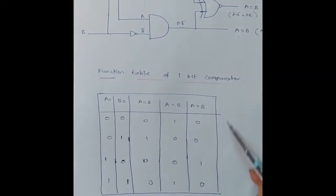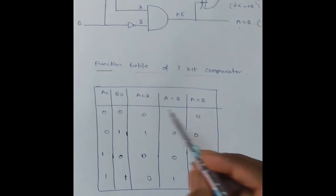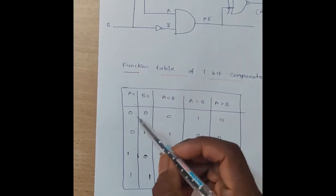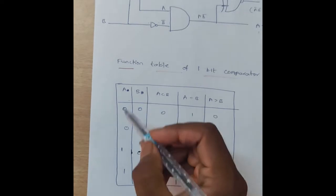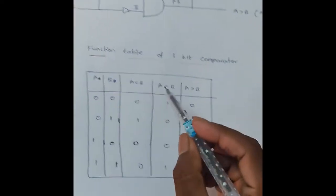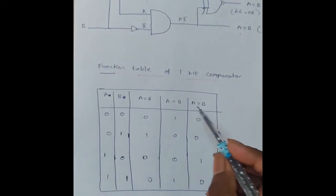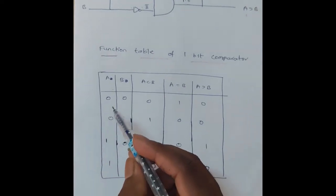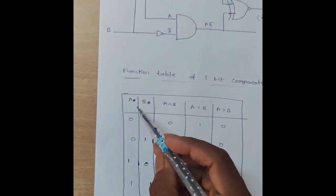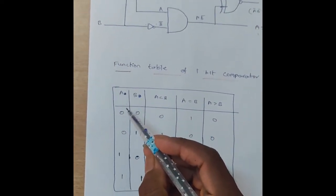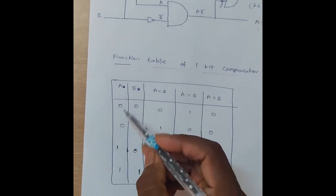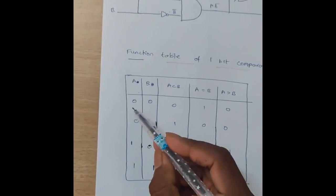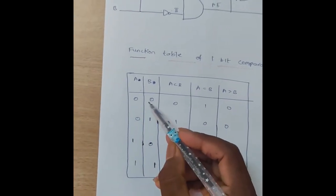This is the function table of the one-bit comparator. A and B are the inputs and the three comparison results are the outputs. With two inputs, there are four combinations — two to the power two equals four. The first combination is zero zero.